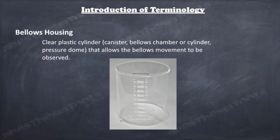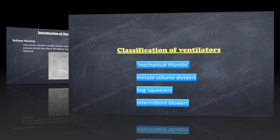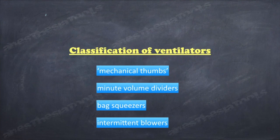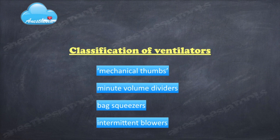There are two types of bellows distinguished by their motion during exhalation: ascending, standing upright or floating ones, and descending or hanging or inverted ones. The bellows is surrounded by a clear plastic cylinder or canister or bellows chamber that allows the bellows movement to be observed. A scale on the side provides a rough approximation of the tidal volume being delivered.